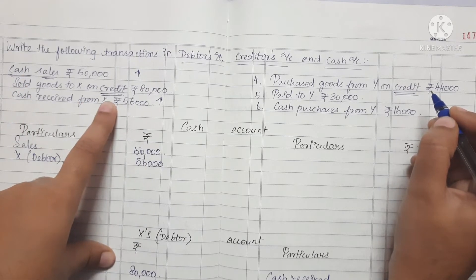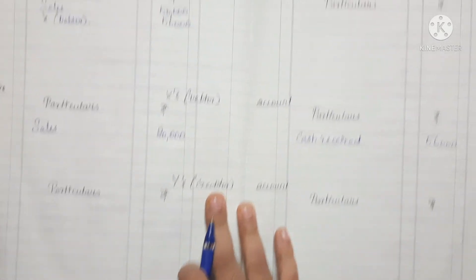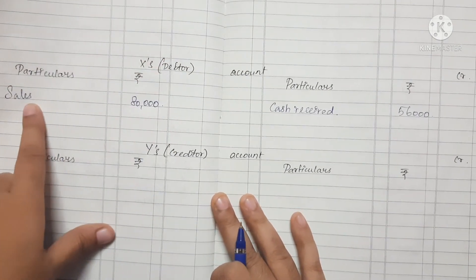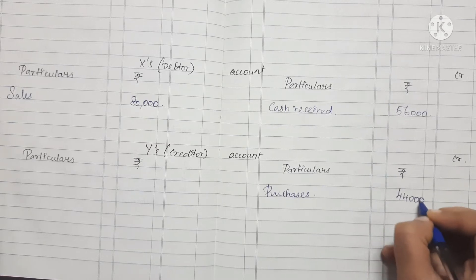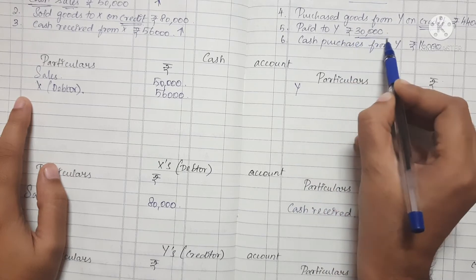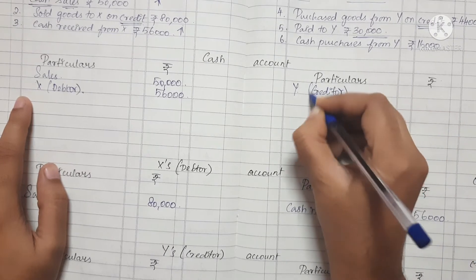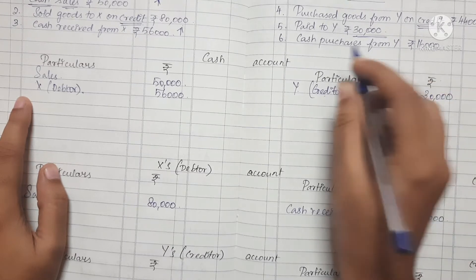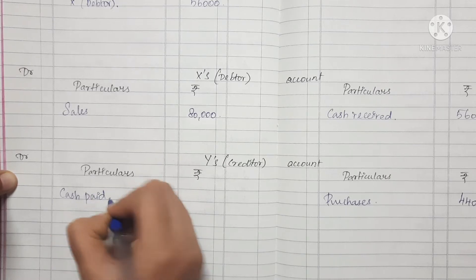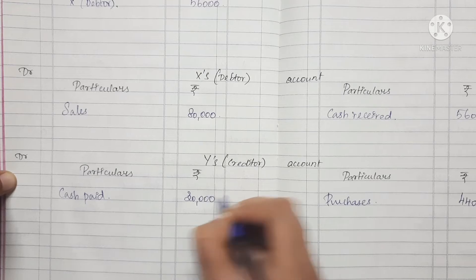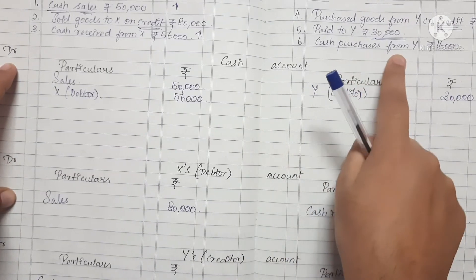Purchase goods from Y on credit, Rs. 44,000. Now we create a Y account. Next, Paid to Y — we pay the amount of cash, Rs. 30,000. When we pay cash, the cash account decreases and the Y creditors account is also updated accordingly.